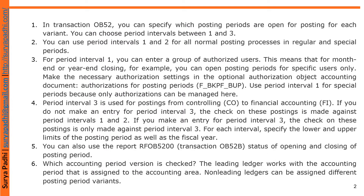In transaction OB52, you can specify which posting periods are open for posting for each variant. You can choose period intervals between 1 and 3. You can use period intervals 1 and 2 for all normal posting processes in regular and special periods.